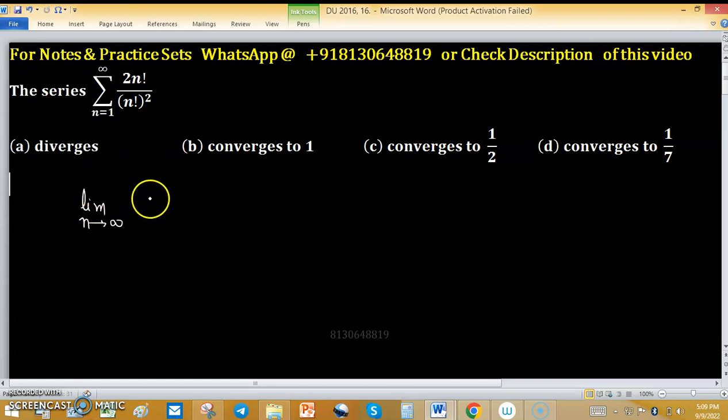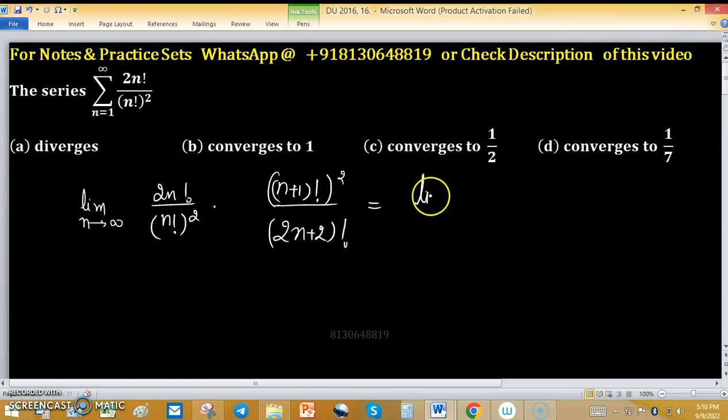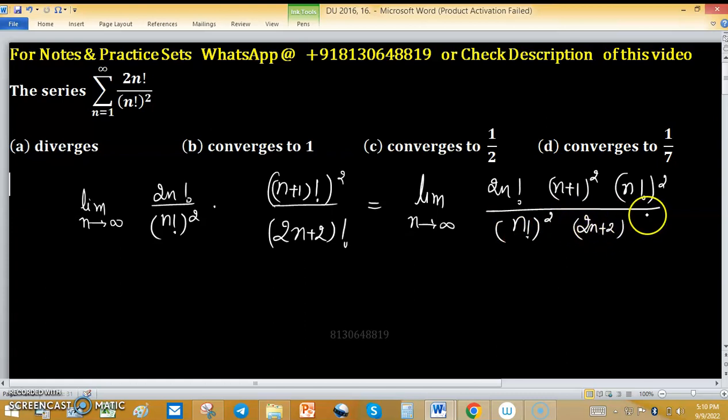According to ratio test, limit n tends to infinity: 2n factorial upon n factorial square, times (n+1) factorial whole square, divided by 2(n+2) factorial. Now simplify. Limit n tends to infinity: 2n factorial (n+1) outside and n factorial whole square upon n factorial square, 2(n+2) outside, 2n+1 factorial.